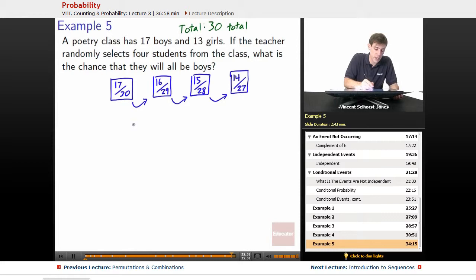So if we want to figure this out, conditional probabilities, we just multiply them all together. So 17 over 30 times 16 over 29 times 15 over 28 times 14 over 27.